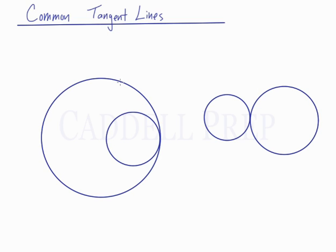In this lesson we're going to look at common tangent lines. In this diagram here we have one circle with another circle inside it, and they're actually tangent to each other here. These are internally tangent circles.